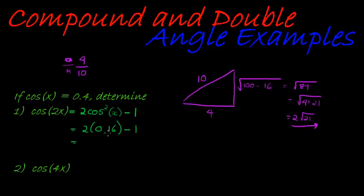And that gives me 2 times 0.16 would give me, what is it, 0.32 minus 1 would be negative 0.68. Okay, that's my first answer.